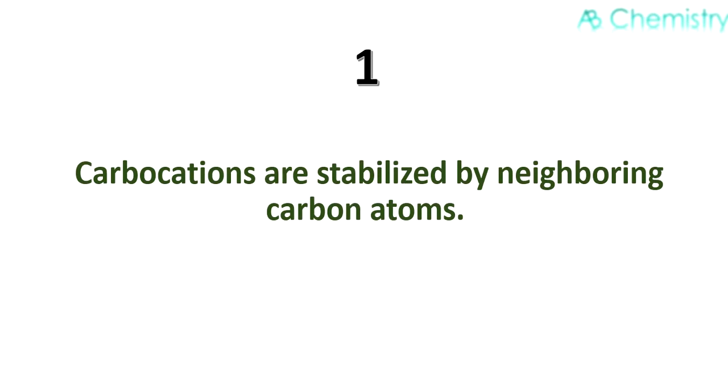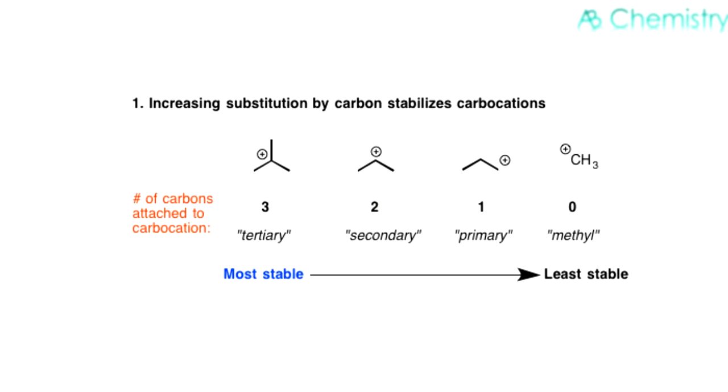So let us look at each of these factors. The first factor: carbocations are stabilized by neighboring carbon atoms. Stability of carbocations increases as we go from primary to secondary to tertiary carbons. There are two answers as to why this is so. You can see the trend - the most stable species is tertiary, and as we decrease, the stability decreases, with methyl having the least stable structure.